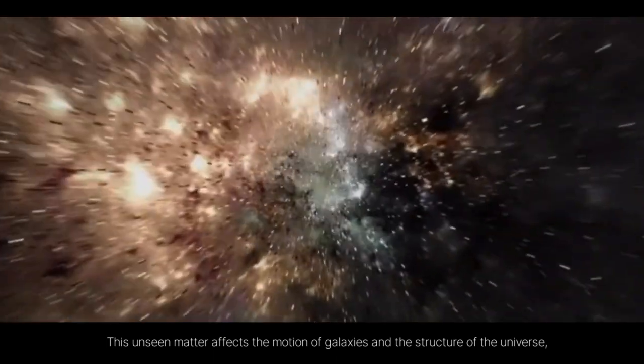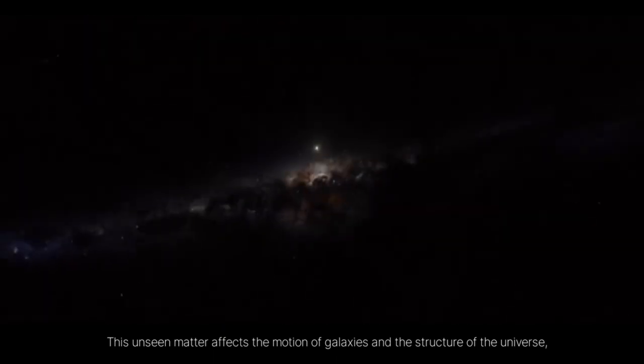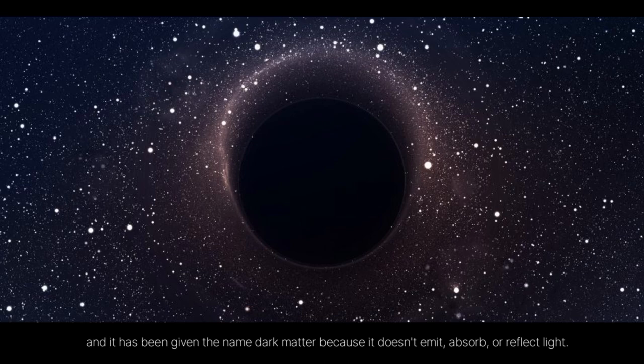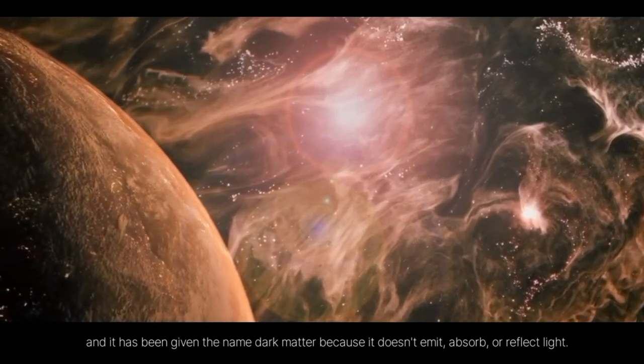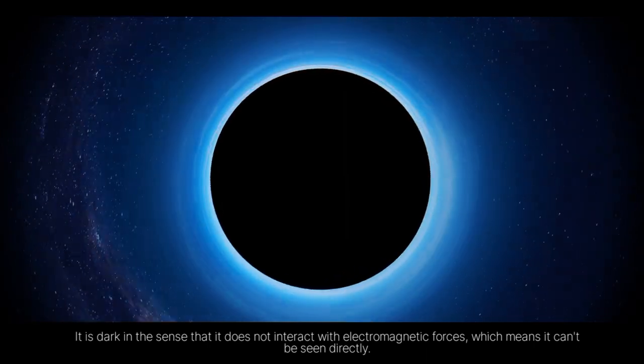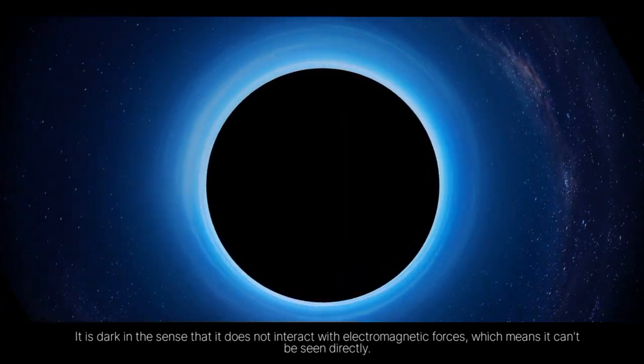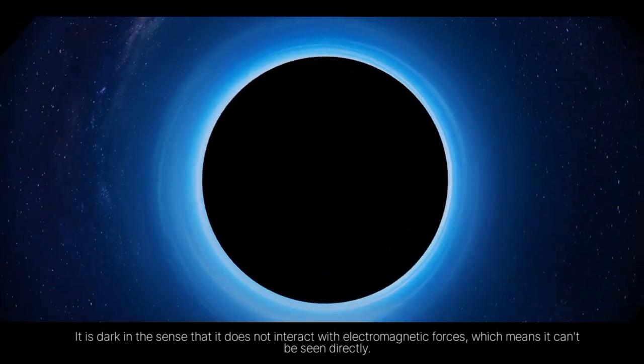Dark Matter. This unseen matter affects the motion of galaxies and the structure of the universe, and it has been given the name dark matter because it doesn't emit, absorb, or reflect light. It is dark in the sense that it does not interact with electromagnetic forces, which means it can't be seen directly.